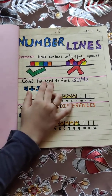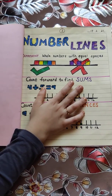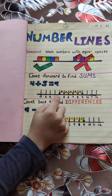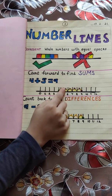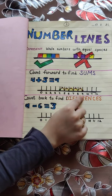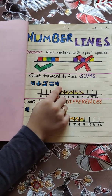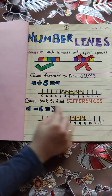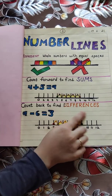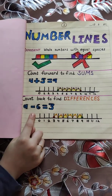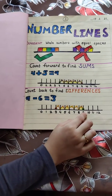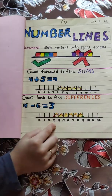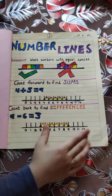We can do subtraction and addition by using these number lines. We have to count forward to find sums. For example, four plus five — we will start with four and go five steps forward: one, two, three, four and five. We reach at nine, so the answer is nine. We have to count back to find differences. For example, nine minus six — we will start with nine and go six steps backward. We reach at three, so the answer will be three.